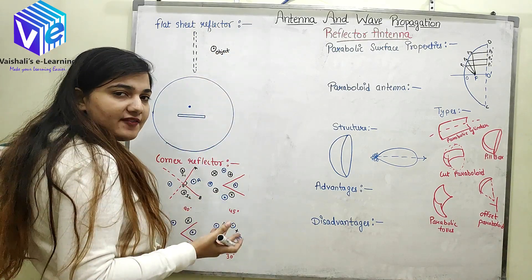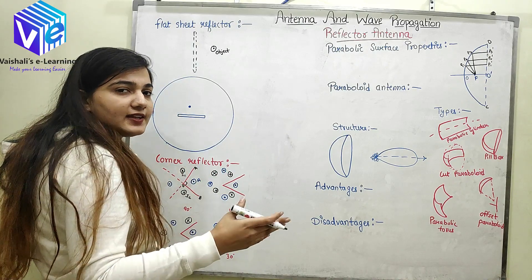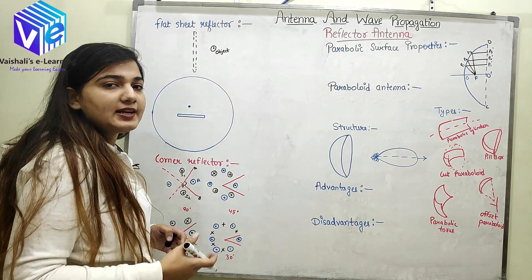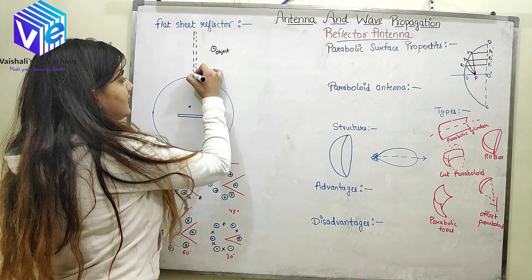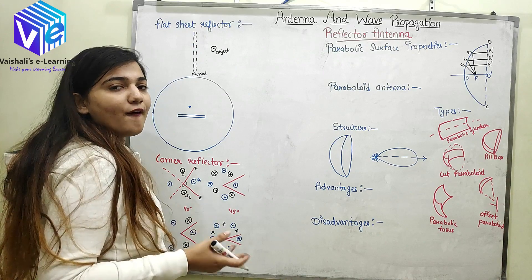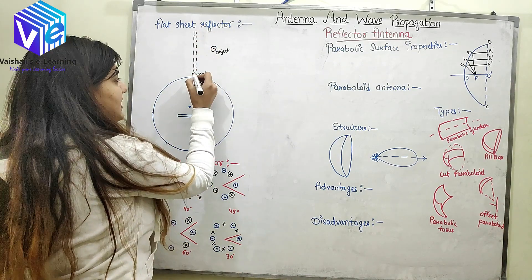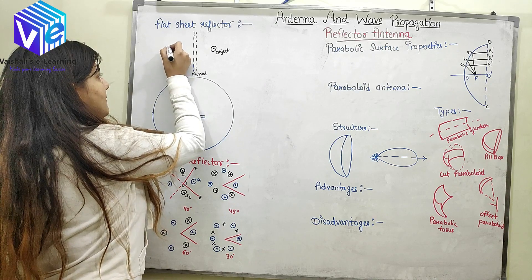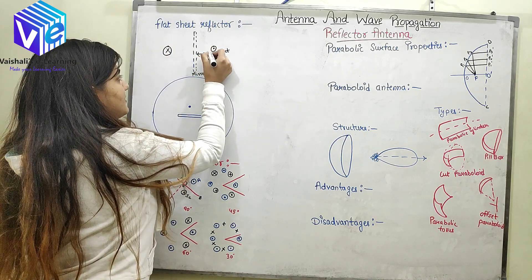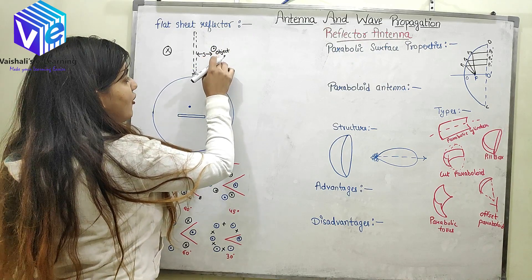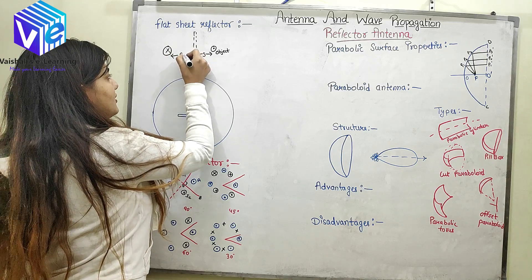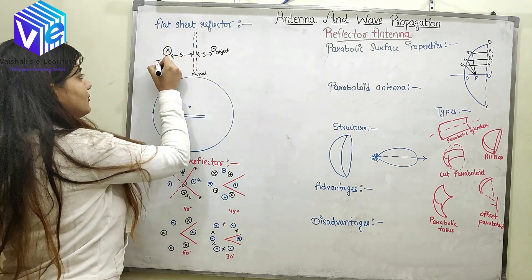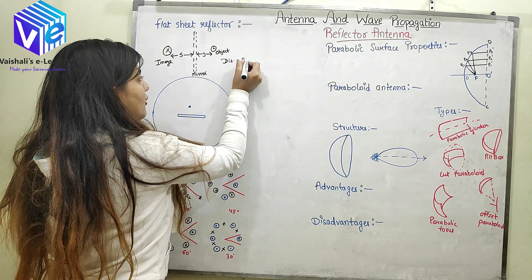Since EM waves behave like rays of light, all antennas and reflecting surfaces work on the principles of ray of light. This flat sheet reflector acts like a mirror, so the object antenna produces its image. The image is placed at the same distance as the object from the mirror. So if the distance of the object from the mirror is S, the distance of the image is also S, making the total distance between object and image equal to 2S.